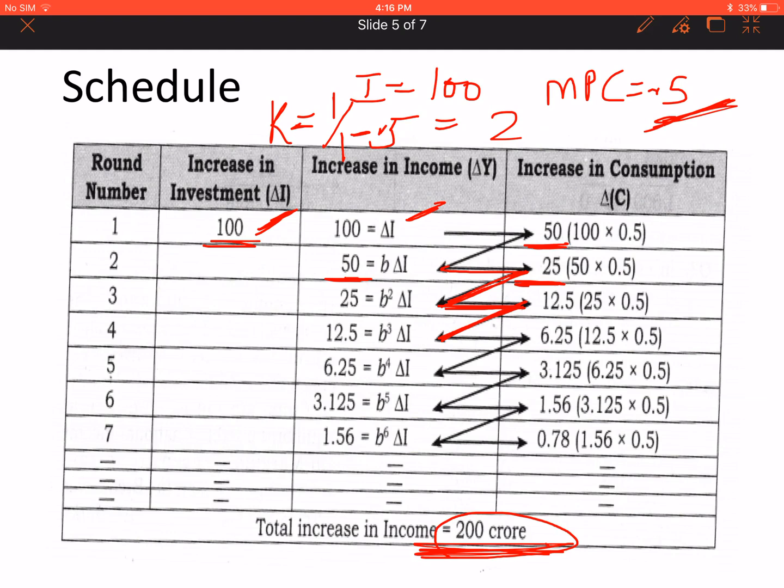Ultimately we can prove with the help of the diagram as well as with the help of schedule that whatever increase in investment happens, many times more increase happens in income. It depends on the value of MPC.